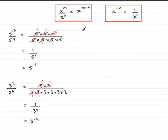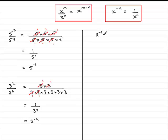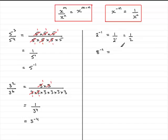Let's extend this further with a few more examples. Suppose I had 2 to the minus 1. By this rule, it must be 1 over 2 to the power 1, where n is 1, giving 1 over 2, which is a half. If I had 8 to the power minus 2, by this rule it's 1 over 8 squared, and 1 over 8 squared is 1 over 64.